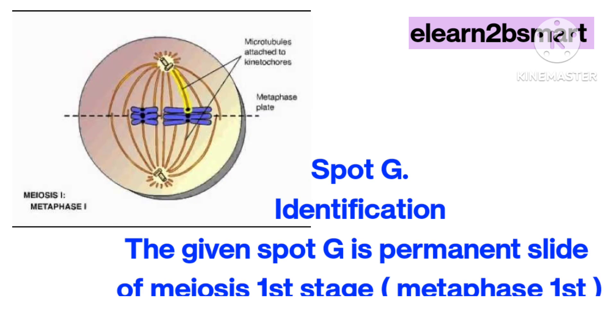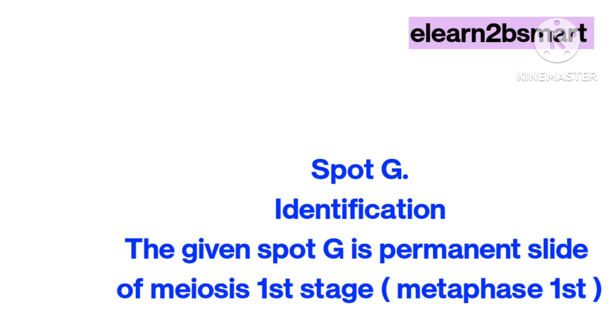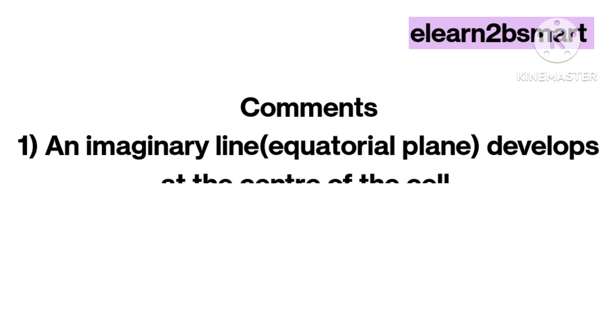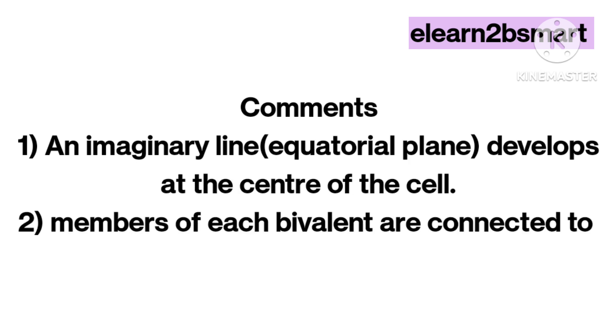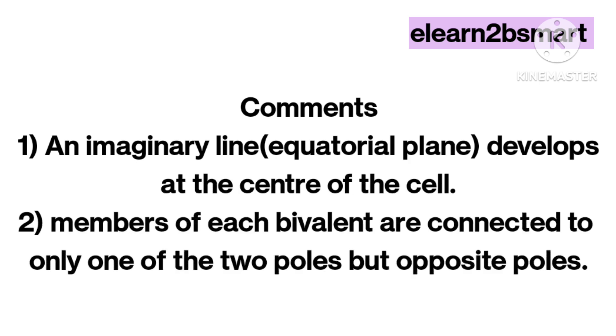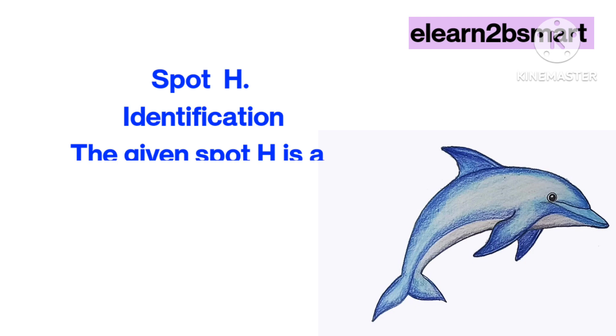Spot G identification: The given spot G is a permanent slide of meiosis I, metaphase I stage. Comments: 1. An imaginary line (equatorial plane) develops at the center of the cell. 2. Members of each bivalent are connected to only one of the two poles but opposite poles.